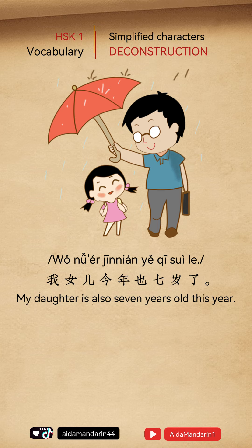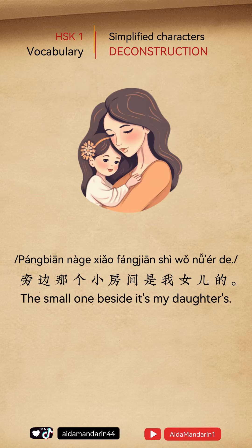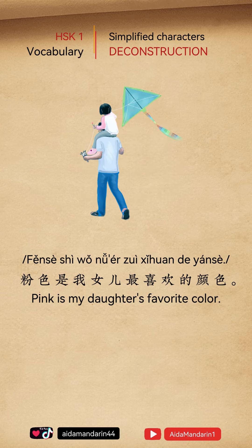我女儿今年也七岁了。My daughter is also seven years old this year. 旁边那个小房间是我女儿的。The small one beside it's my daughter's. 粉色是我女儿最喜欢的颜色。Pink is my daughter's favorite color.